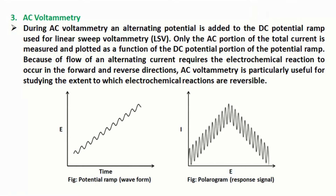AC voltammetry: during AC voltammetry, an alternating potential is added to the DC potential ramp used for linear sweep voltammetry (LSV). Only the AC portion of the total current is measured and plotted as a function of the DC potential portion of the ramp. Because flow of an alternating current requires the electrochemical reaction to occur in both forward and reverse directions, AC voltammetry is particularly useful for studying the extent to which electrochemical reactions are reversible.